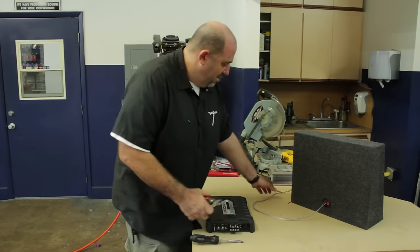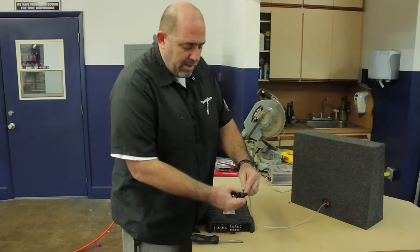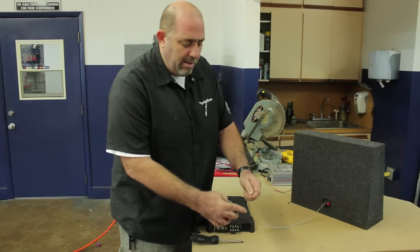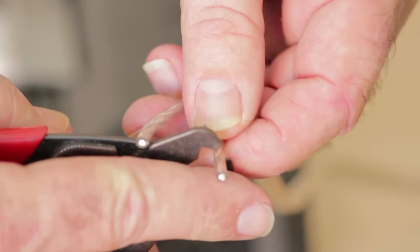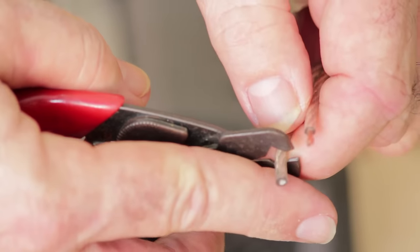First, we're going to take the wire from our subwoofer. We're going to split it down the middle, separate a little bit, and we're going to strip off about a half an inch of insulation on both the positive and negative wire.